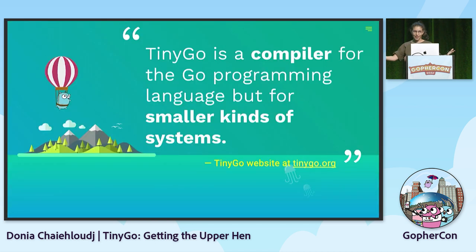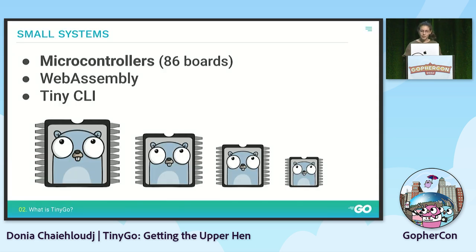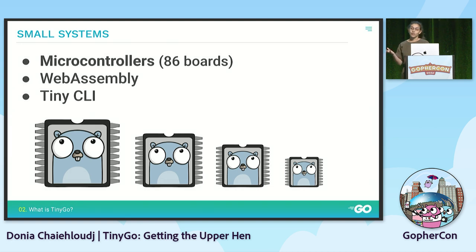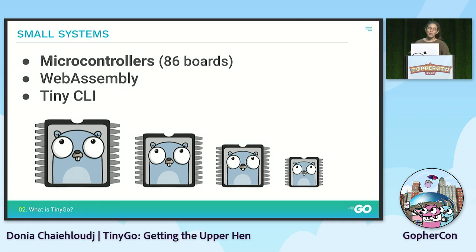Let's dive into TinyGo. TinyGo is a compiler for the Go programming language, but for smaller kinds of systems. Small systems are places where the memory size is limited - for example, microcontrollers. Microcontrollers are like small computers. If you had the chance to get a Go badge, that's a microcontroller. TinyGo supports around 86 boards, maybe a bit more now. You can also use TinyGo for building WebAssembly.